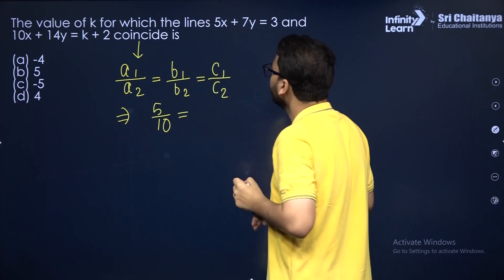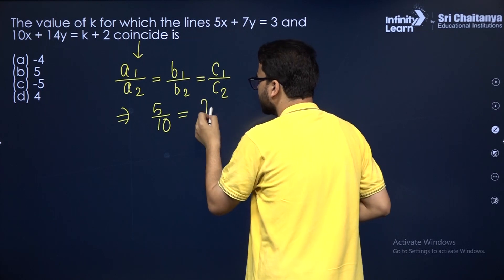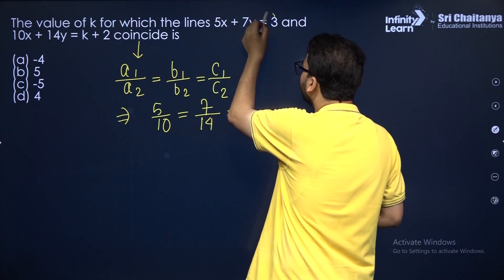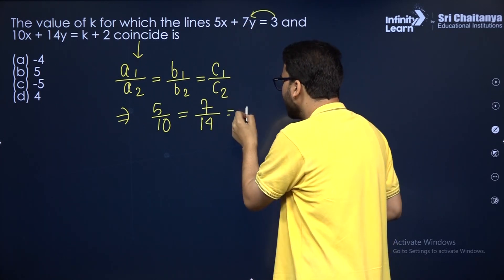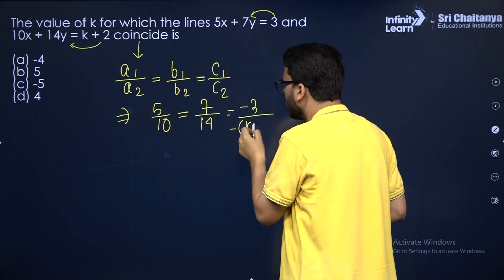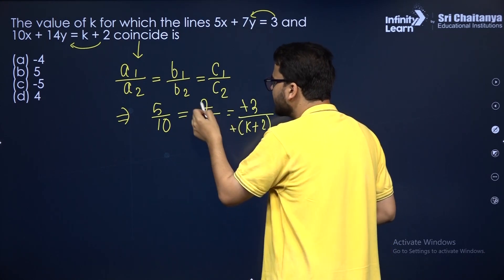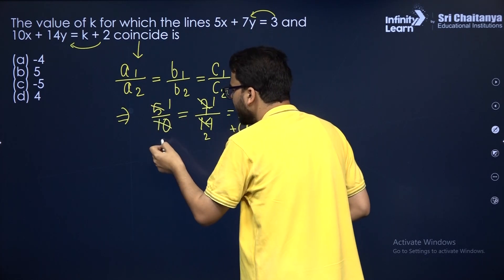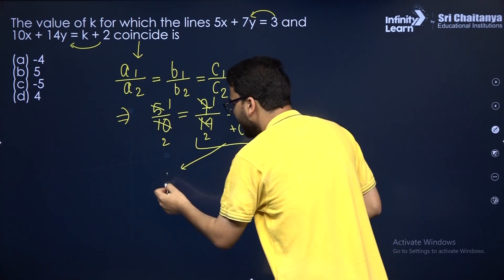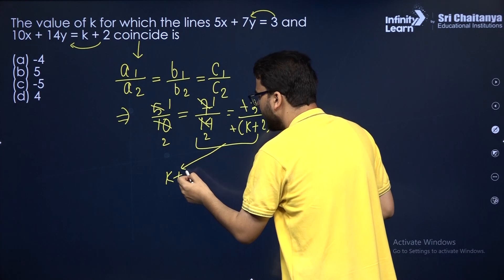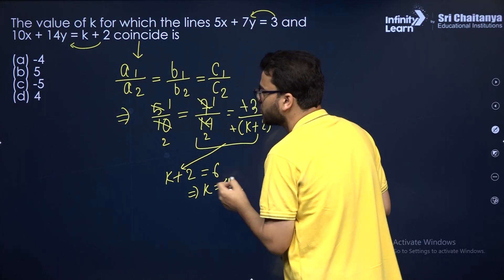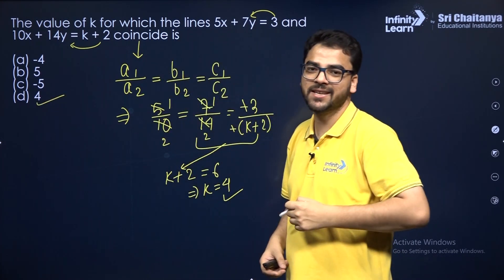B1 by B2 is 7 by 14. And C1 by C2 — taking constants to this side — gives minus 3 over minus of k plus 2. The 5 by 10 and 7 by 14 both simplify to 1 by 2. So 1 by 2 must equal minus 3 over minus of k plus 2. Cross multiplying gives k plus 2 equals 6, so k equals 4. I hope it is clear.